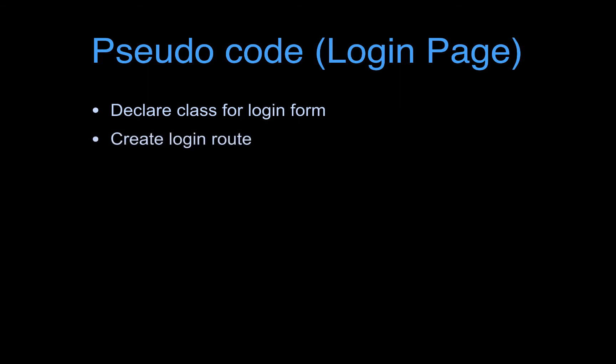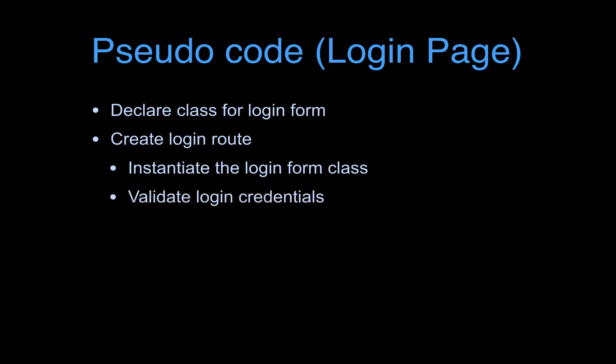Once we have this form, we'll go to application.py and create a route for login. In this route we first need to instantiate the class we created in step 1. Next we need to write some code using Flask SQLAlchemy to check whether the username and password entered match the data in our database. If they do, we log in the user and take them to the chatroom. We don't have a chatroom page yet but we will be creating it later in the series.